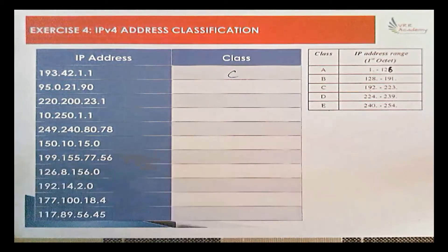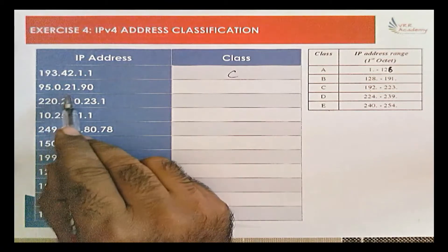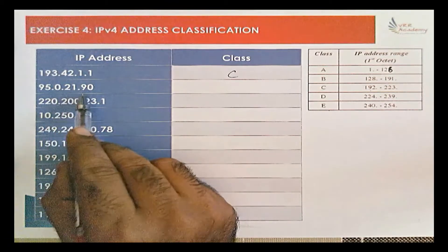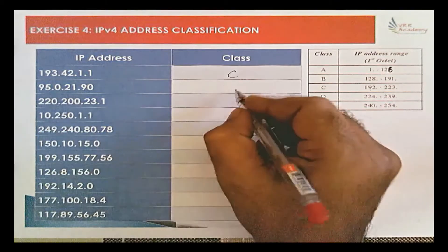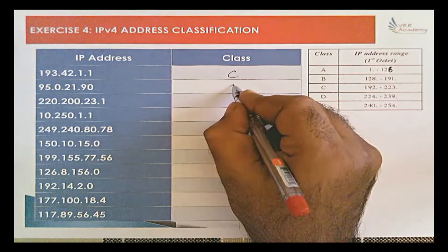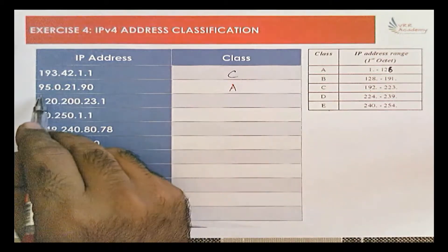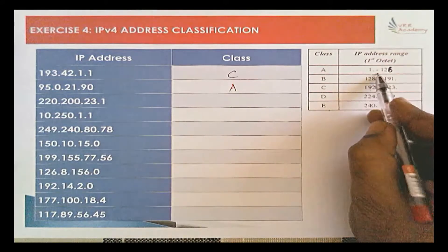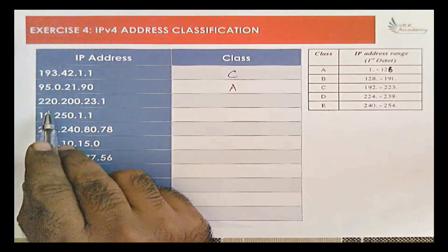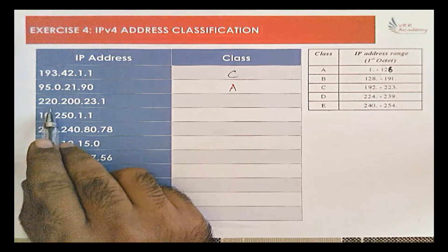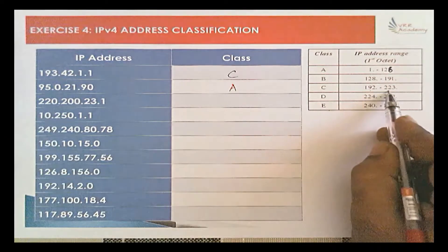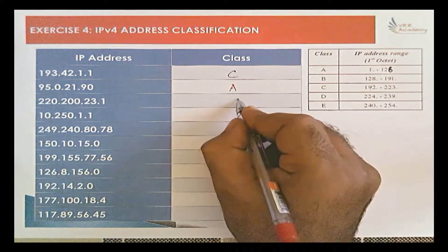The next one is 95.0.21.90. The first octet is 95, which falls in Class A range. Then 220 — the first octet 220 falls in the range of 192 to 223, so that is a Class C IP address.